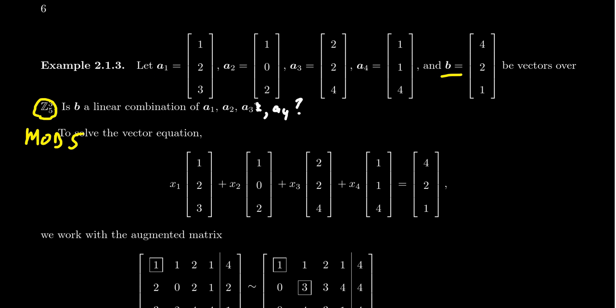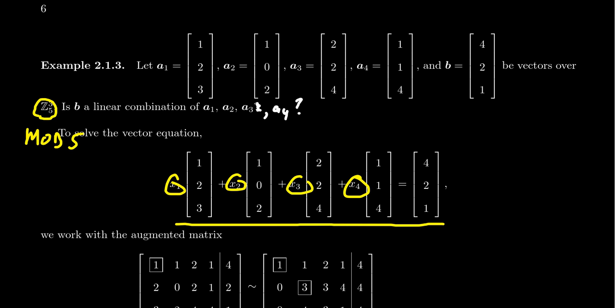Remember, when we work mod five we only have five numbers in our arithmetic: 0, 1, 2, 3, and 4. If B were a linear combination of the A_i's, then that means there would be some scalars x1, x2, x3, x4 so that these things combine together to give us B.